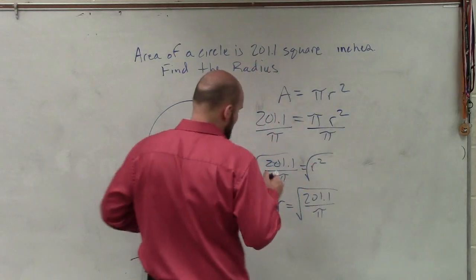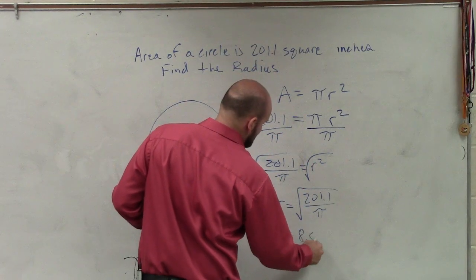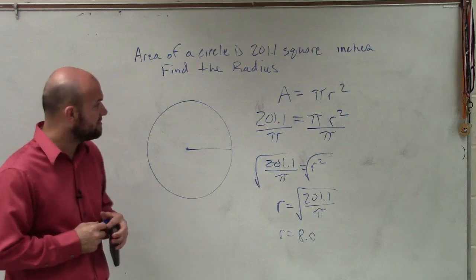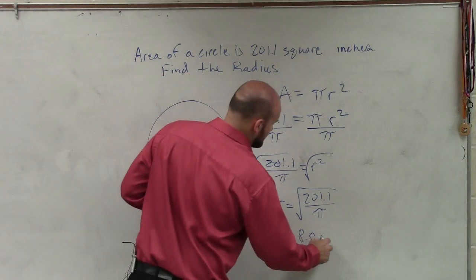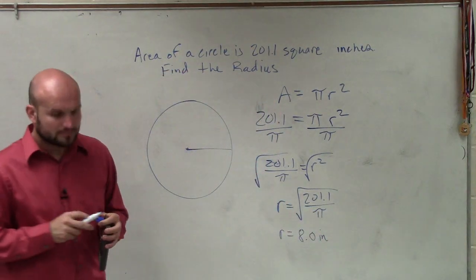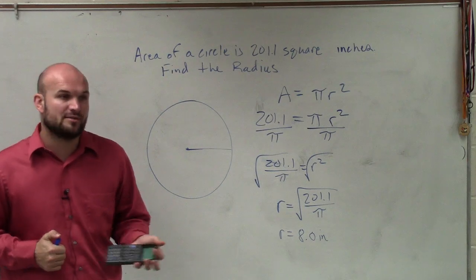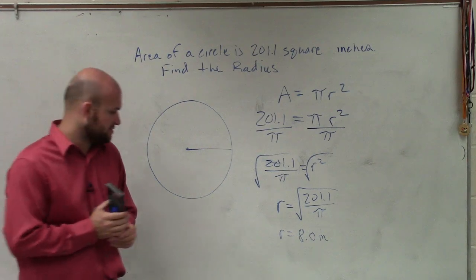So therefore, my radius equals 8.0 as I round to the tenth, and that's in inches. Since the length is just one-dimensional, it's just inches. It's not inches squared or so forth.